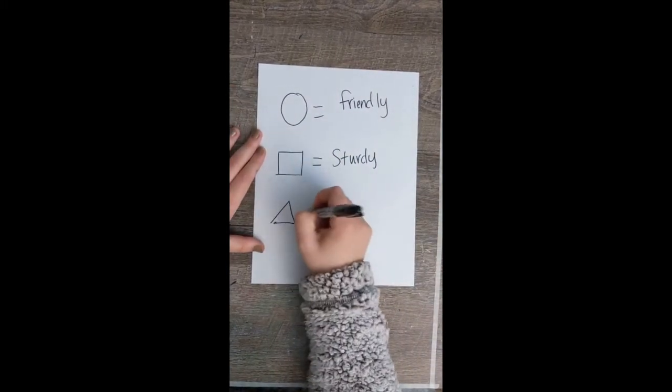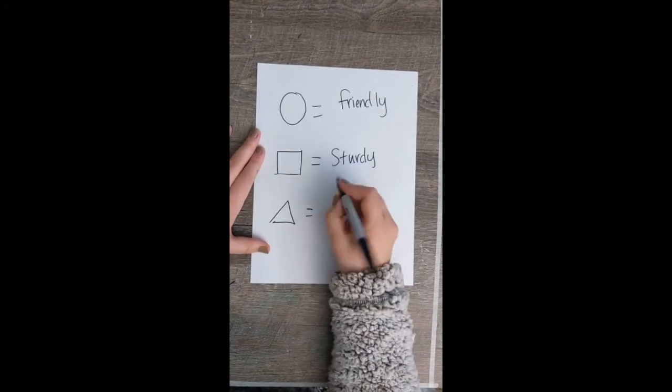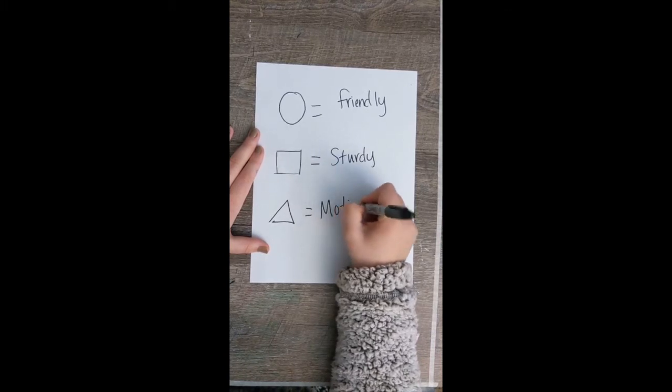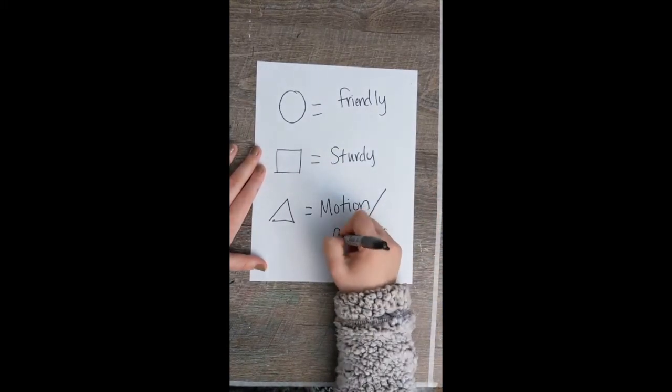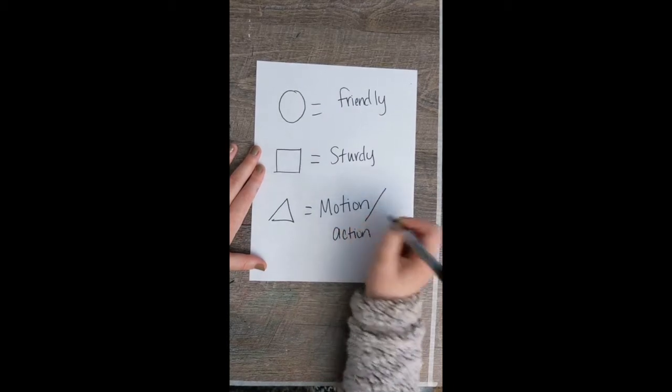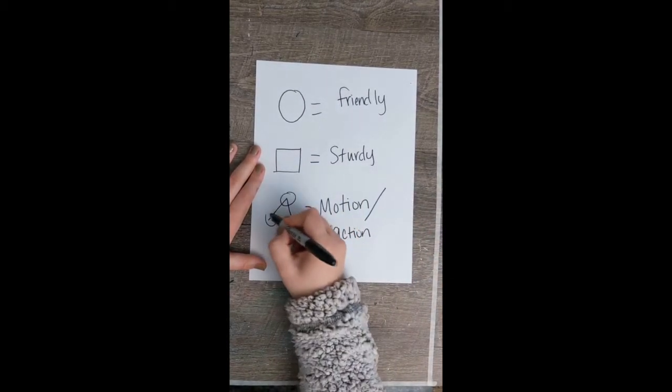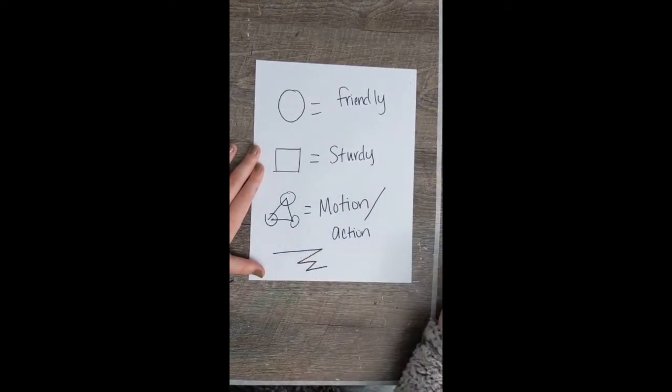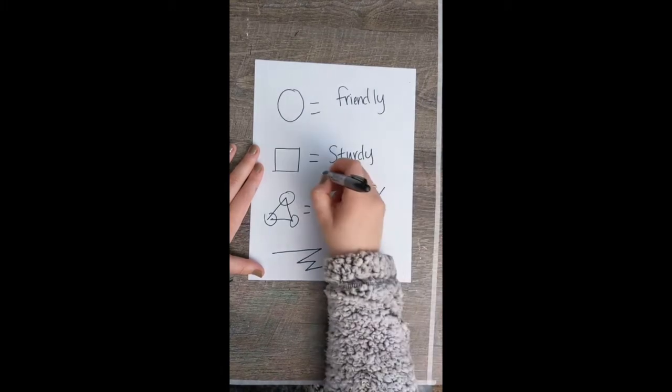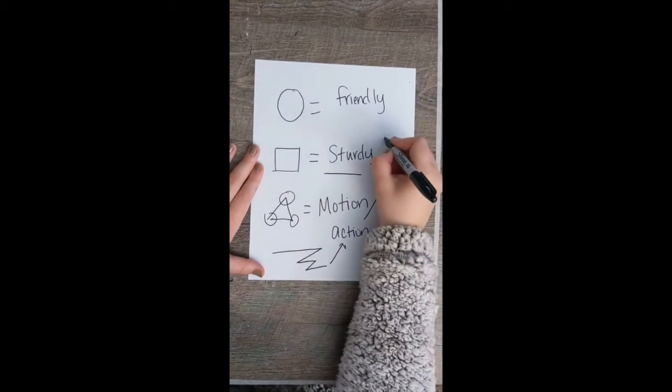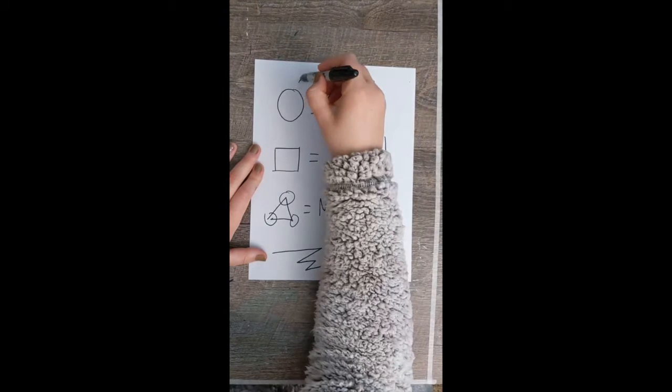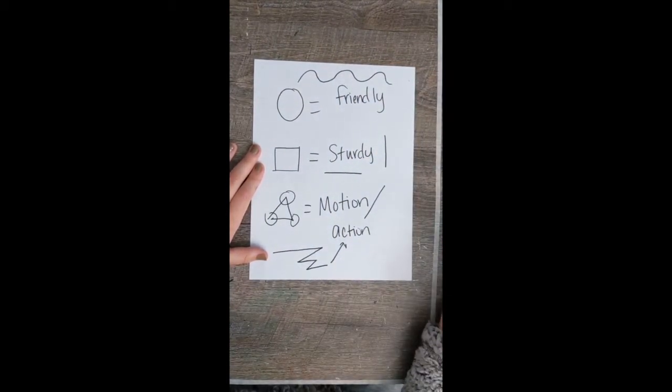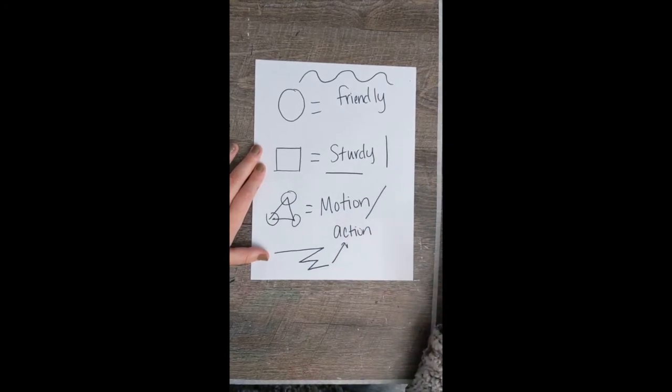A triangle can emphasize motion or action, and that's based off of the points, the way that it is. So like a zigzag line would also mean action. Strong, stable, straight lines mean sturdy, and wavy can also mean friendly. So keep that in mind when you start drawing your character.